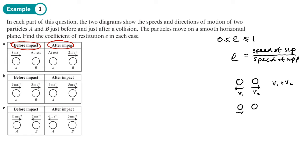If after the collision v1 and v2 are moving in the same direction, then v2 would be greater than v1 for it to be moving away, and the speed of separation would be v2 minus v1. For example, if v2 is moving at 10 and v1 at 9, the speed of separation is only one — so we subtract in that case.